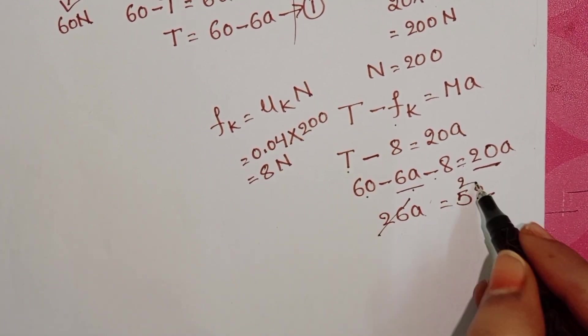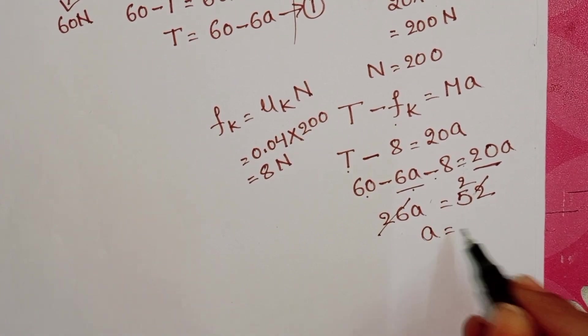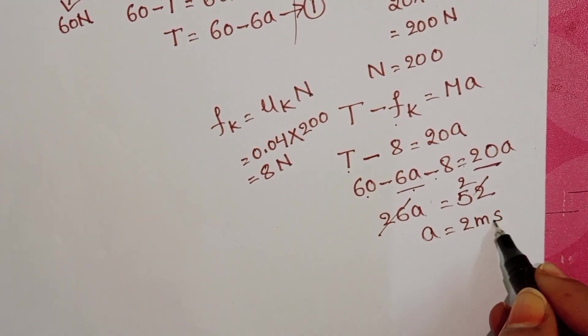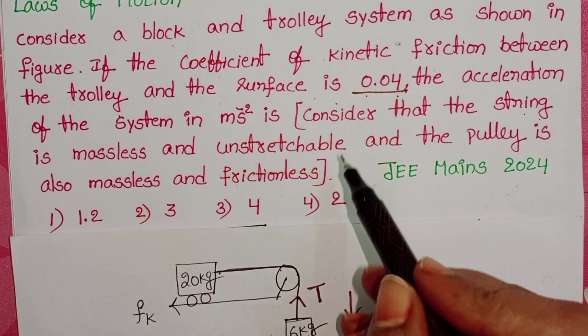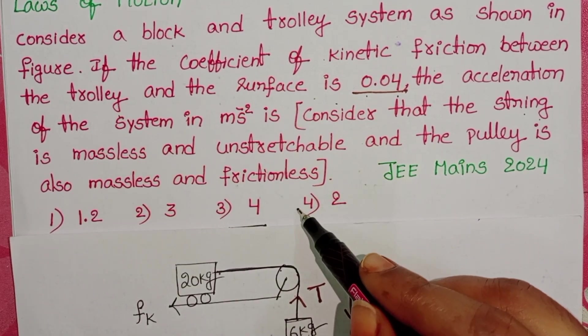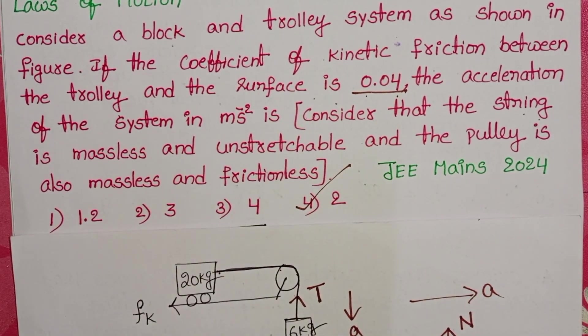26 into 1 is 26, 26 into 2 is 52. So acceleration equals 2 meters per second squared. The acceleration of the system is 2 meters per second squared. Fourth option is correct.